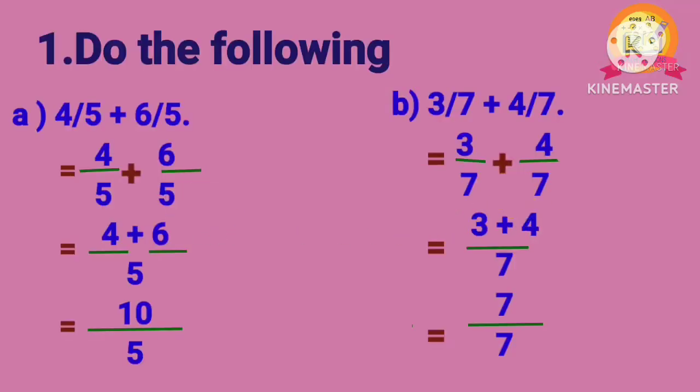First Roman: Addition of fractions. Problem A: 4 by 5 plus 6 by 5. As the denominators of both fractions are the same, we can add these fractions: 4 plus 6. After adding both fractions, we get 10 by 5.